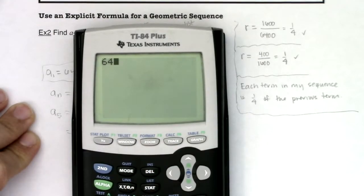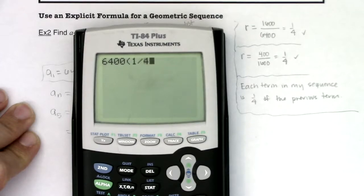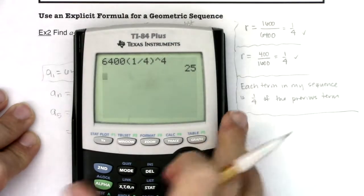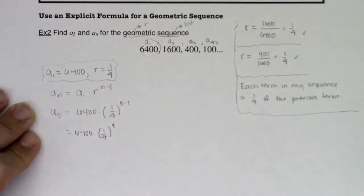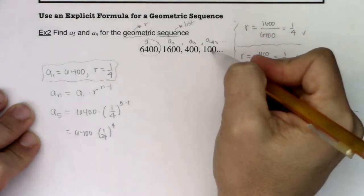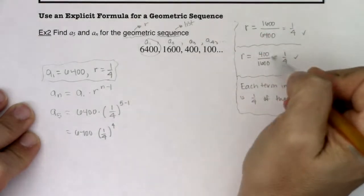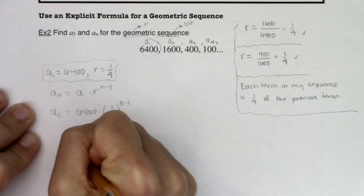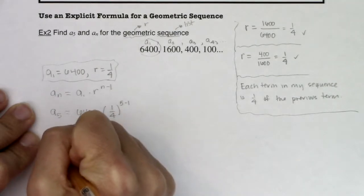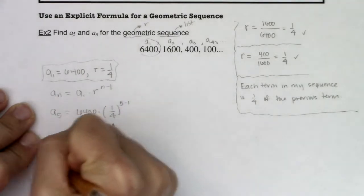Let me clear this out. 6,400 times 1 fourth to the fourth. We are looking at 25. And I would have guessed that anyways because if you do 100 and you multiply it by a fourth, you are going to see it's 25. So I know a sub 5 is 25. There's one of my answers.